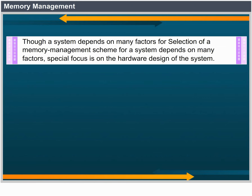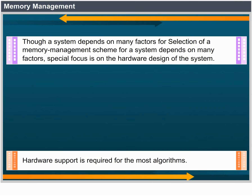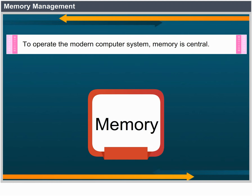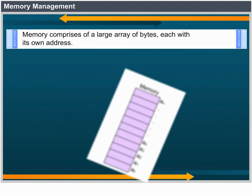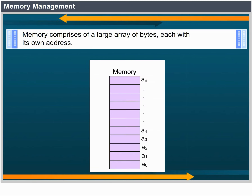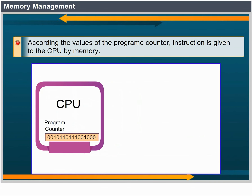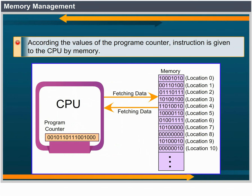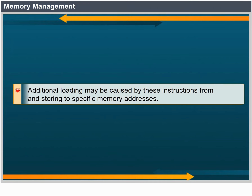Selection of a memory management scheme for a system depends on many factors, especially on the hardware design of the system. Most algorithms require hardware support. Memory is central to the operation of a modern computer system. Memory consists of a large array of bytes, each with its own address. The CPU fetches instructions from memory according to the value of the program counter. These instructions may cause additional loading from and storing to specific memory addresses.